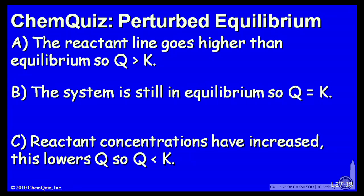Let's look at a possible explanation for each answer. A, the reactant line goes higher than equilibrium, so Q is greater than K. B, the system is still in equilibrium, so Q equals K. Or C, the reactant concentrations have increased. This lowers Q, so Q is less than K. Think about those three explanations and make a selection.